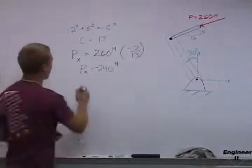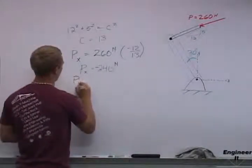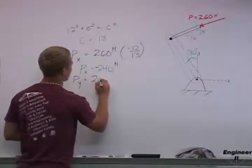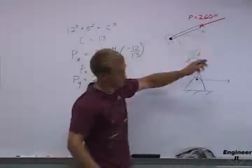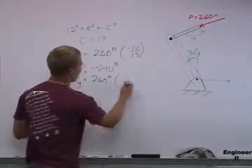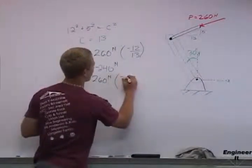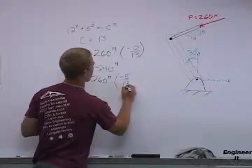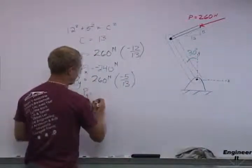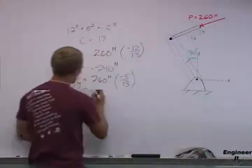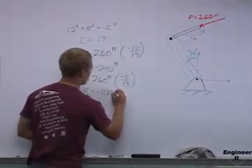We can do the same thing for the y. The y component is going to be 260 newtons times negative 5 because it's acting downward in the y. Negative 5 divided by 13, so our y component will be negative 100 newtons.